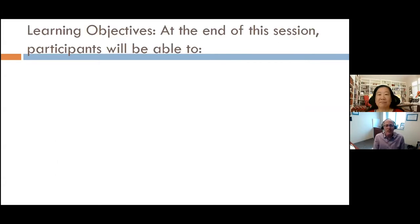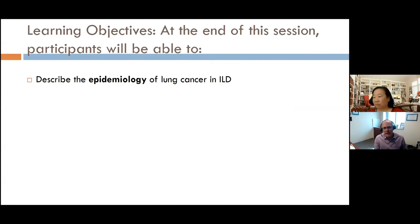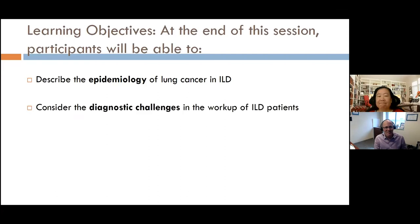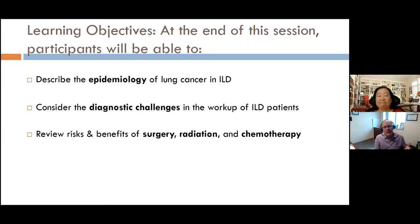My goal today is to cover four large topics. First, I'll describe the epidemiology of lung cancer in patients with interstitial lung disease, or ILD. With COVID being active, everyone's becoming a bit of an epidemiologist, so you'll have an idea of what we're talking about. We'll also talk about some of the diagnostic challenges and the workup of patients with ILD — specifically, how we normally work up someone with lung cancer and why some tests may not work or may not be available for ILD patients.